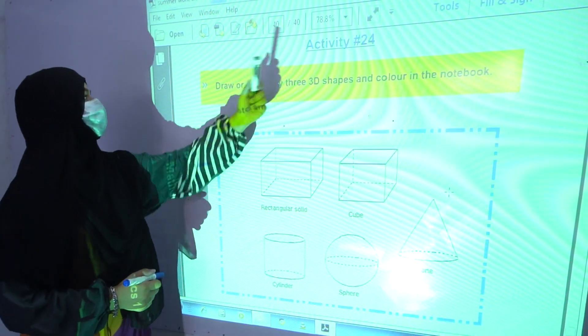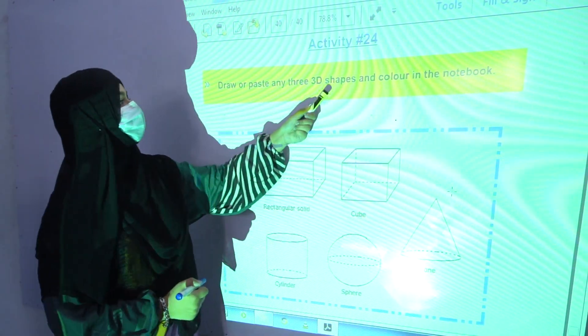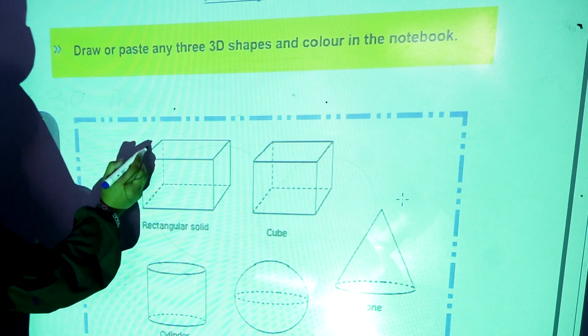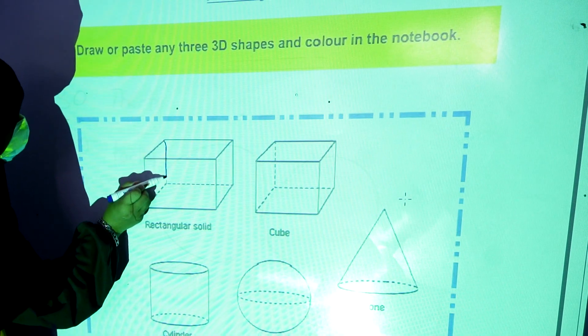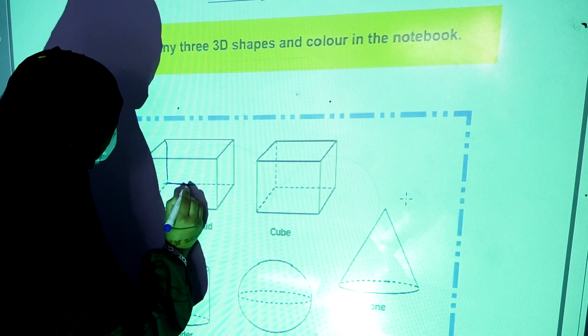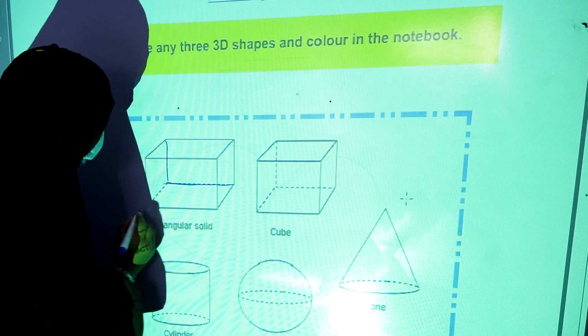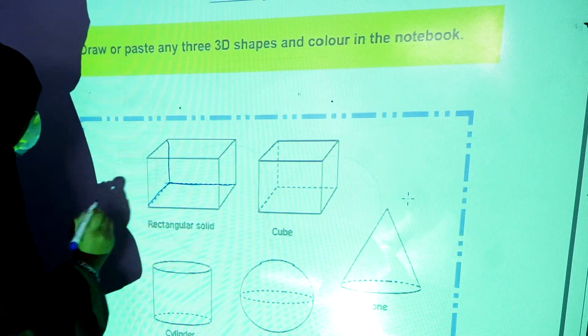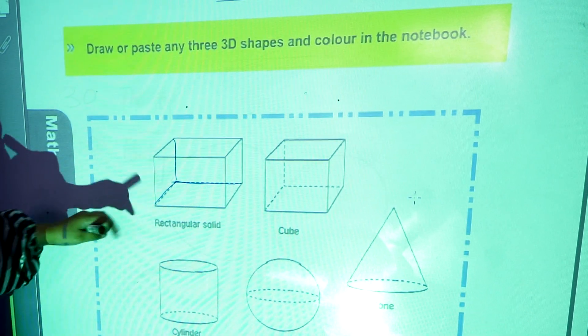Now activity number 24, draw or paste any 3D shapes and color in the notebook. First of all, you will trace them like this. After this, you have to paste them in your notebooks.